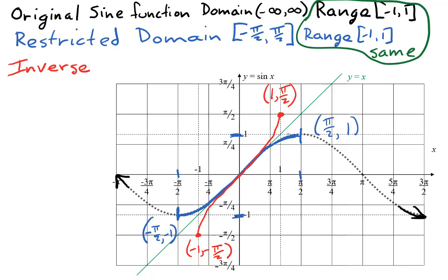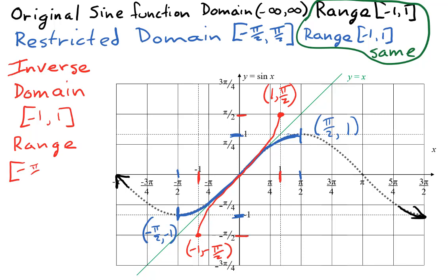The inverse should look like a reflection across the y equals x line of the sine curve, passing through the points we've plotted. Looking at this inverse curve, we see it passes through x values from negative 1 to positive 1 — that's the domain. The range is negative pi over 2 to positive pi over 2. The restricted domain for sine, negative pi over 2 to positive pi over 2, has become the range of the inverse, and the range of sine, negative 1 to 1, has become the domain of the inverse — because finding an inverse switches the roles of x and y. This red curve is called y equals sine inverse of x, or arc sine of x. Those two terms are interchangeable.